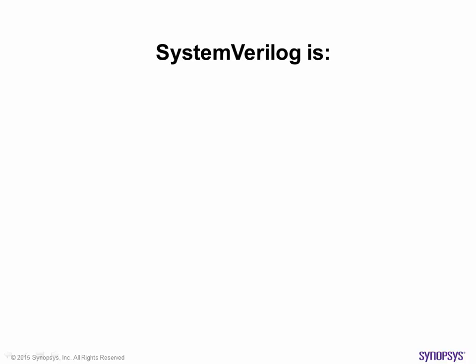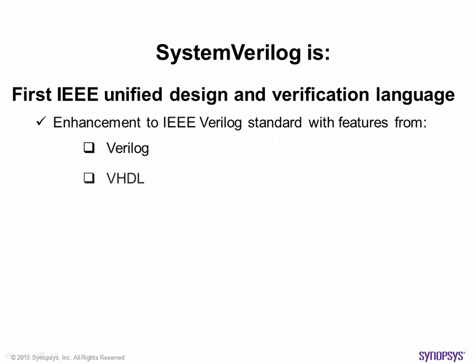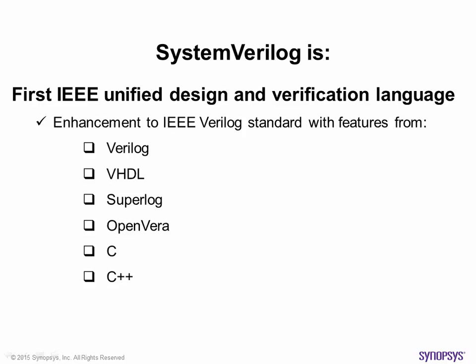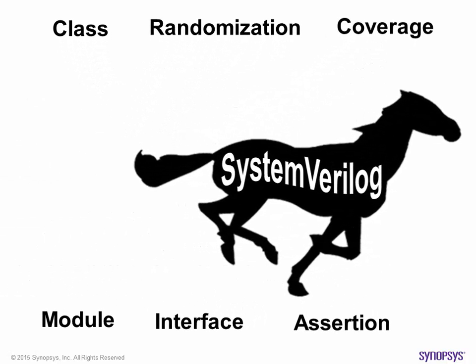This is where System Verilog comes into play. System Verilog is the first IEEE language that unifies RTL design and verification into a single language, with features adopted from a wide variety of other well-understood languages. In addition to module, System Verilog added interface, assertion, class, randomization, and coverage into the language.